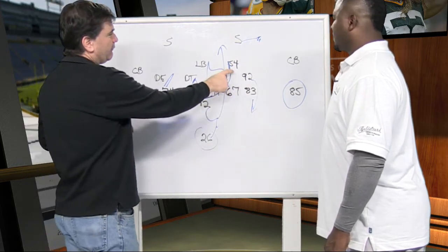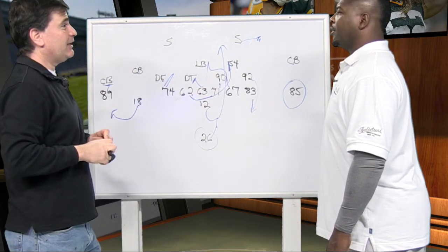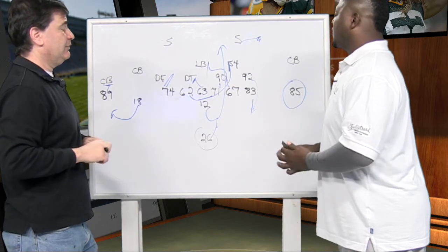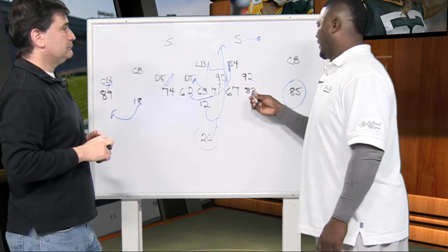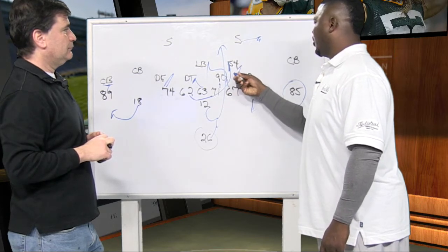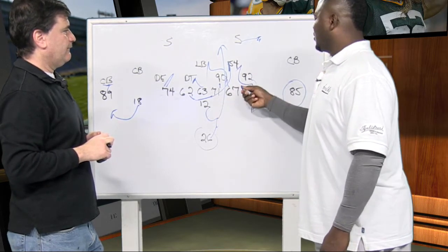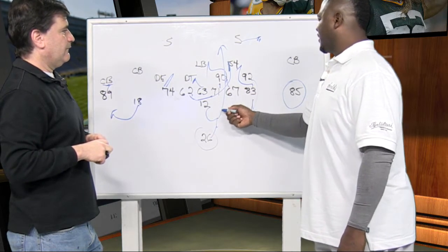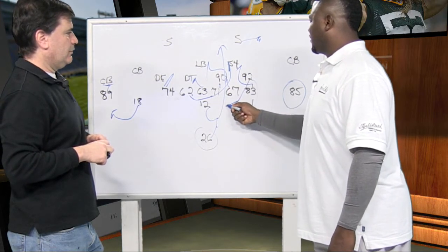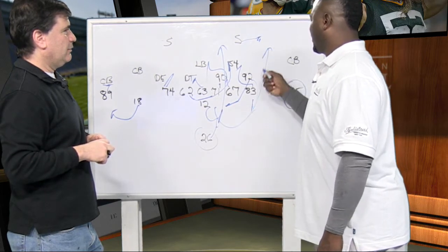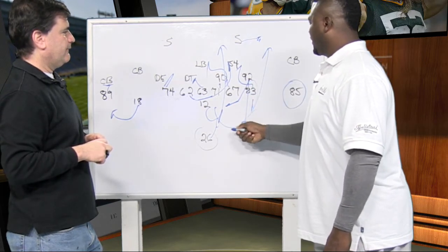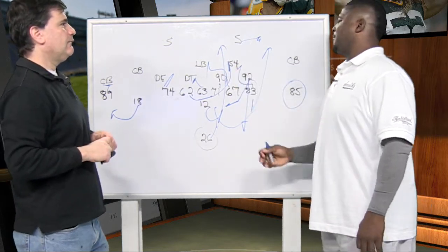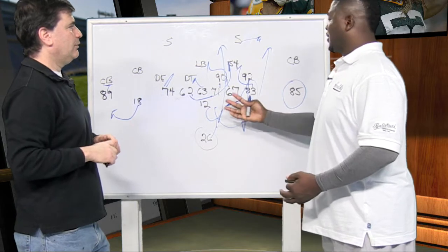And you just follow that big guard right in there. And that was a heck of a block on DeAndre Levy by Dietrich. He comes right at the knees and made him fall right on his face. And they also can do another version off here where you don't even block the end. Crabtree bypasses and walls this guy off. And Rodgers would, what we call the ride and decide. He'll put the ball in Harris or the running back's stomach. If the end comes down, he'll pull it and then Rodgers will run up here. Or if the guy goes up the field, then you'll hand it off and it's still a big play.